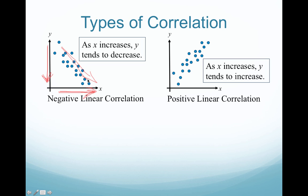What about a positive linear correlation? This is as X increases, Y tends to increase. So as X gets bigger, Y too gets bigger, and we have a positive linear relationship. An example would be: the longer you study, the better you do on the test — the longer you study, the higher your test score.